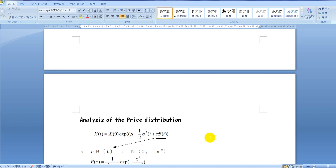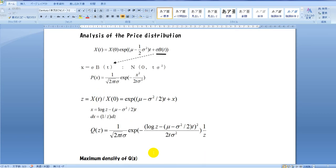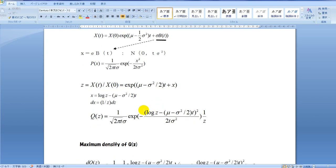Analysis of the price distribution. The price distribution at time T is expressed like this. And describe this term as X. The probability density function of X is expressed like this. And let a new variable z be standardized X as follows. The density function of z is calculated like this.